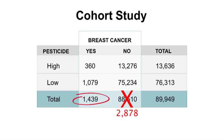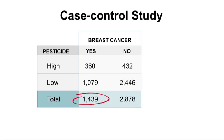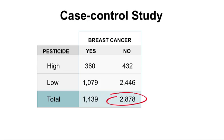Now, let's imagine that these data were used instead for a case control study. Recall that, to be efficient, the researchers should analyze all blood from the cases — N equals 1,439 — but just take a sample of the women who did not get breast cancer, say two times as many cases, or N equals 2,878. These data can be used to estimate the risk ratio or rate ratio depending on how we sample the controls.